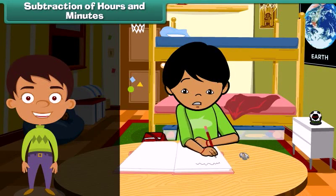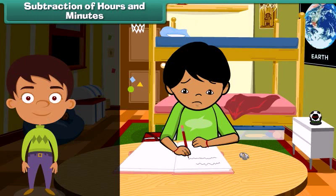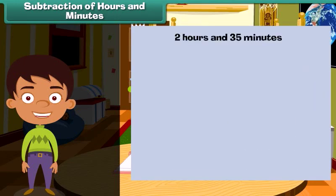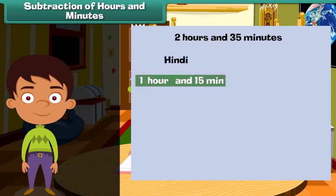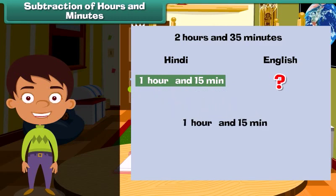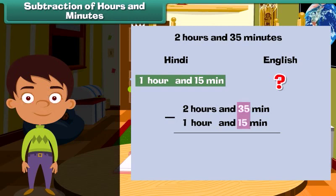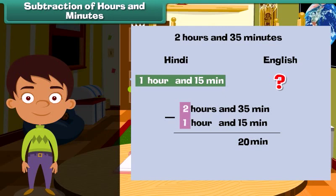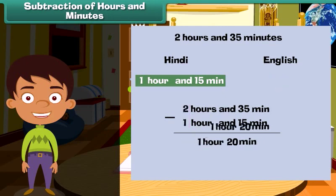Subtraction of hours and minutes. Latika completed her English and Hindi homework in 2 hours and 35 minutes. Hindi homework was over in 1 hour 15 minutes. How much time did Latika take to complete her English homework? Subtract the time taken for Hindi homework from the total time. First, subtract the minutes: 35 minus 15 is 20 minutes. Now subtract the hours: 2 minus 1 is 1 hour. So Latika took 1 hour and 20 minutes to complete her English homework.